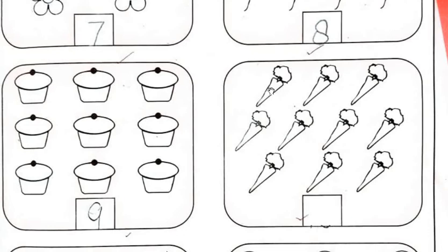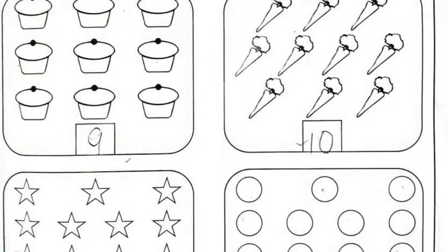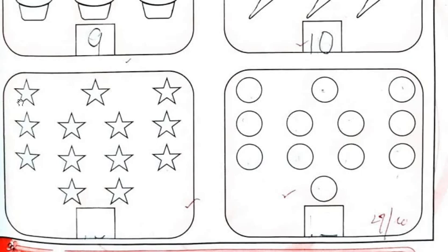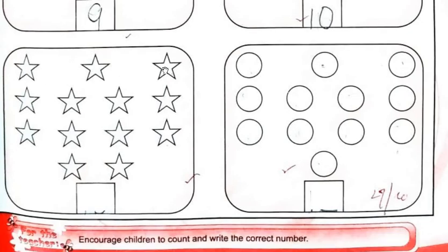Next: carrots — one, two, three, four, five, six, seven, eight, nine, ten. Ten carrots, so you have to write number ten. Next: stars — one, two, three, four, five, six, seven, eight, nine, ten, eleven, twelve, thirteen. So number thirteen goes in the box.